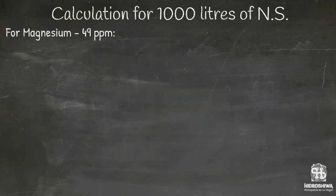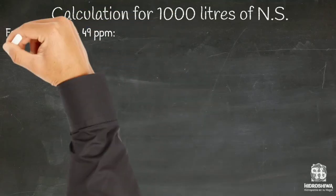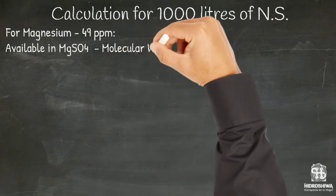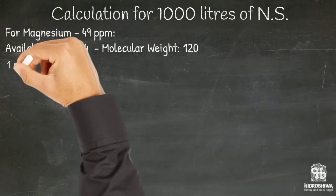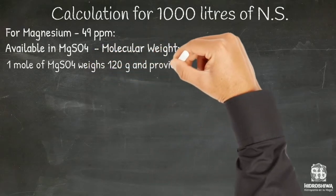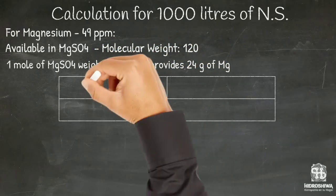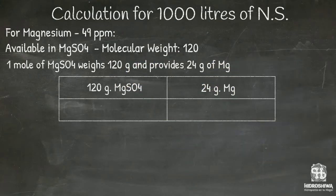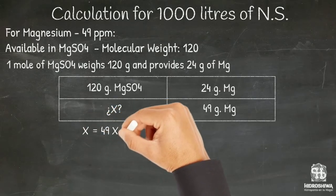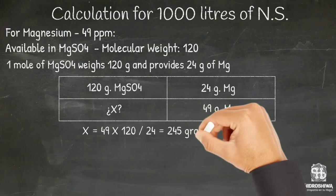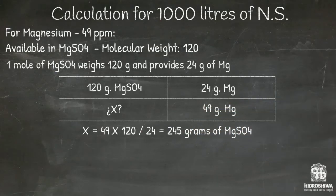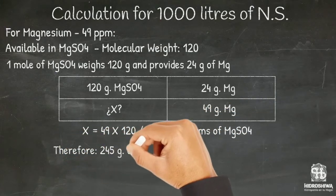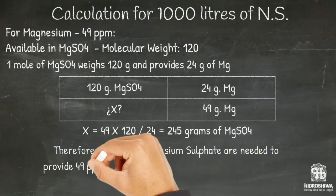We continue with magnesium, available in magnesium sulfate. The molecular weight is 120. One mole of magnesium sulfate weighs 120 grams and provides 24 grams of magnesium. We calculate the amount of magnesium sulfate to provide the required 49 parts per million: X equals 49 times 120 divided by 24, giving 245 grams of magnesium sulfate. That amount provides 49 grams of magnesium and also an amount of sulfur that we will see below.